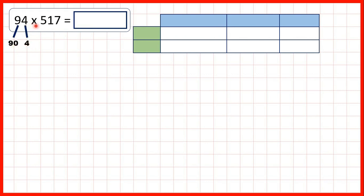And we're multiplying by 517, so 500, 10, and 7. We can write the partitioned numbers on our grid.